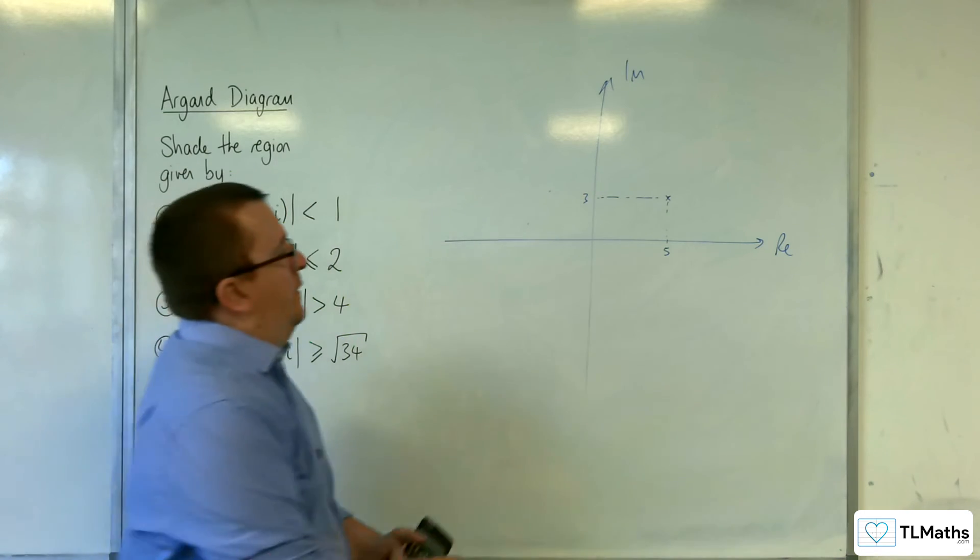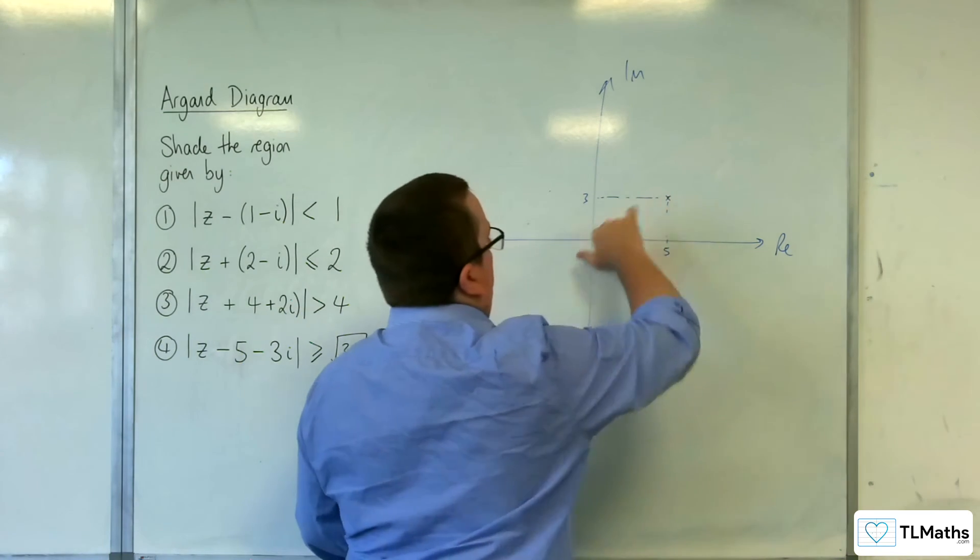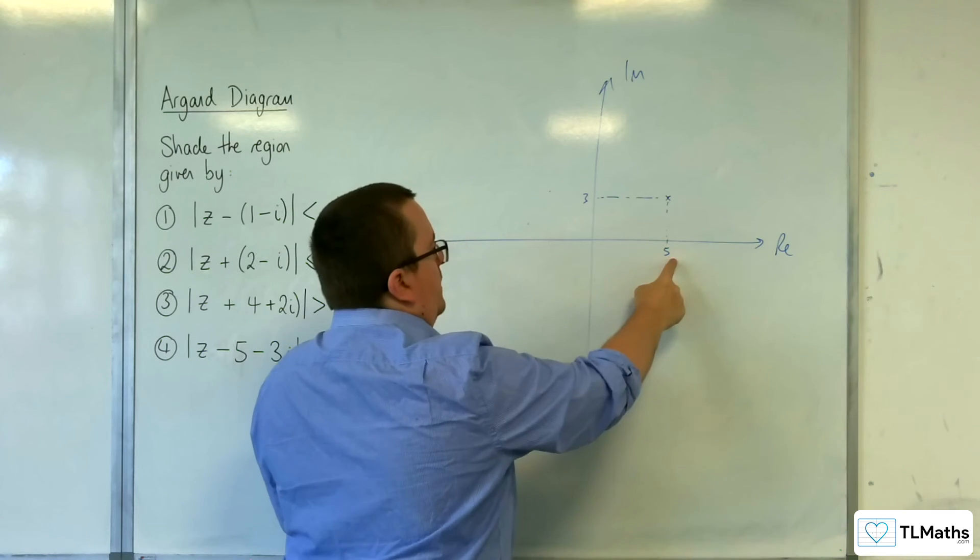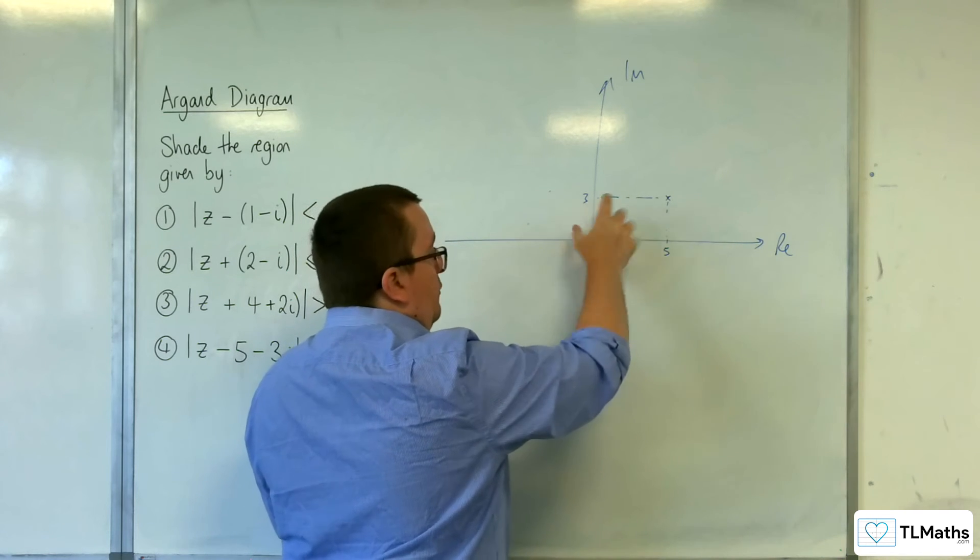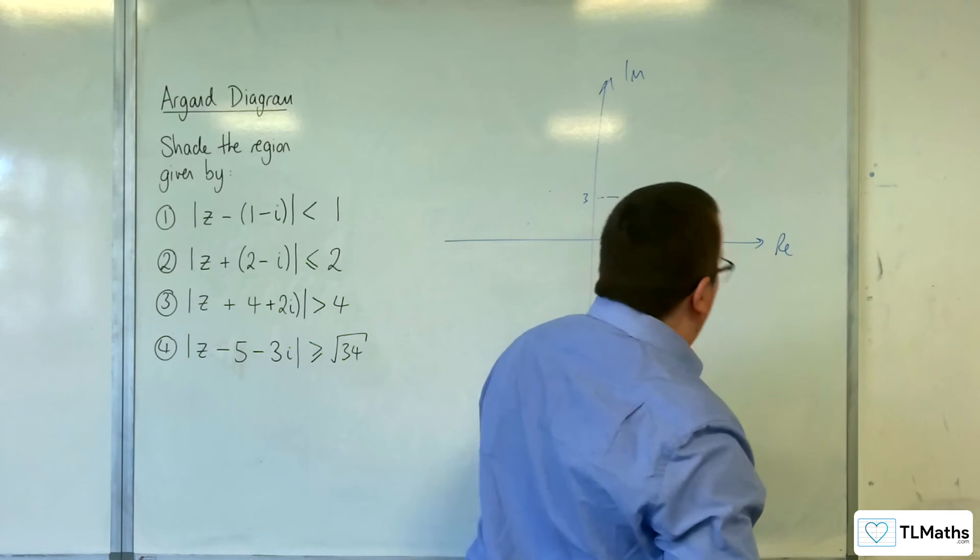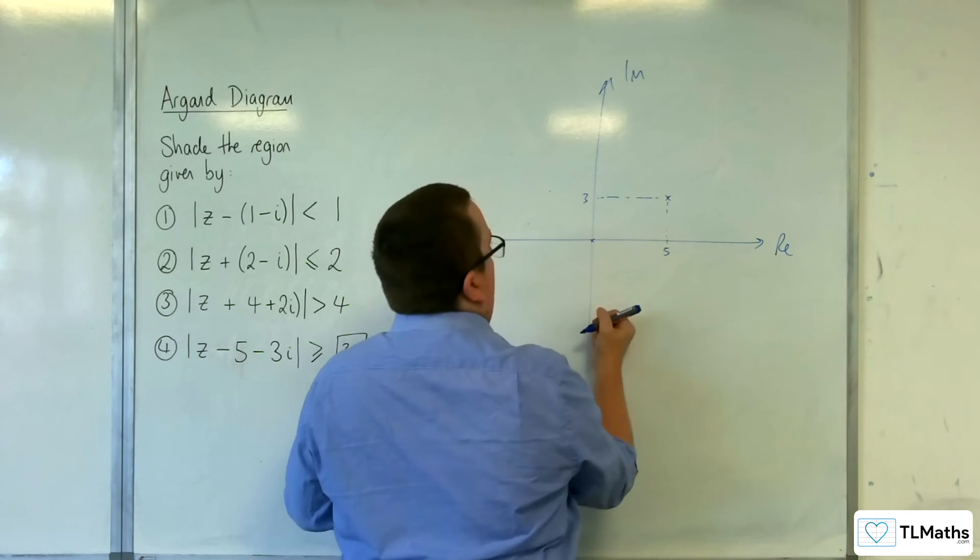So what have we got there? So the length of this complex number is a square root of 5 squared plus 3 squared. 25 plus 9. So 34. So that's root 34. So that means that it goes through the origin.